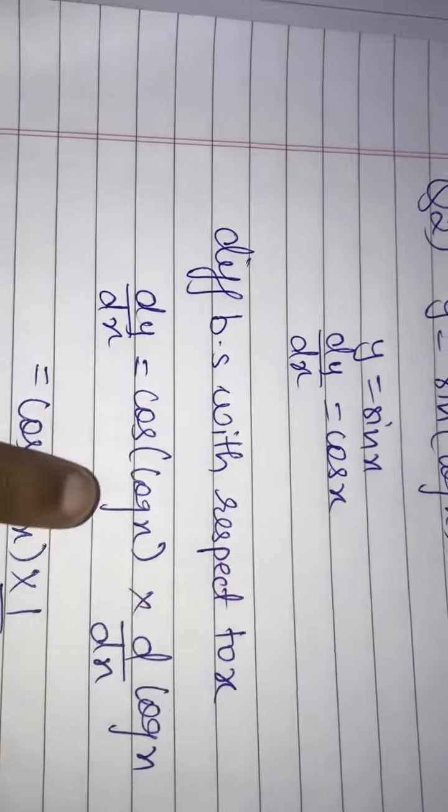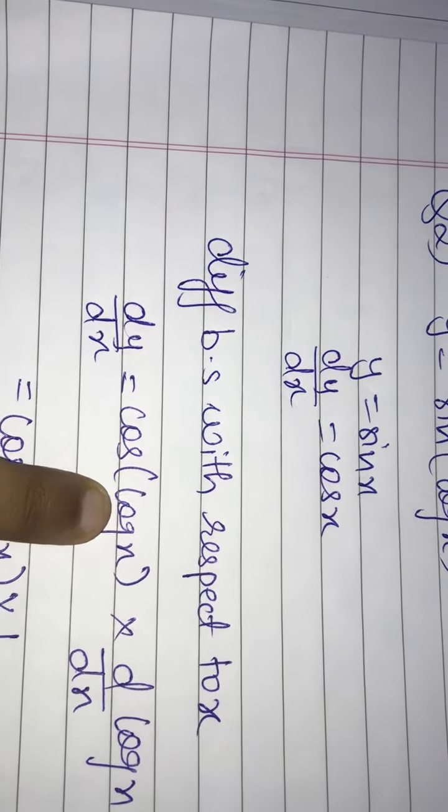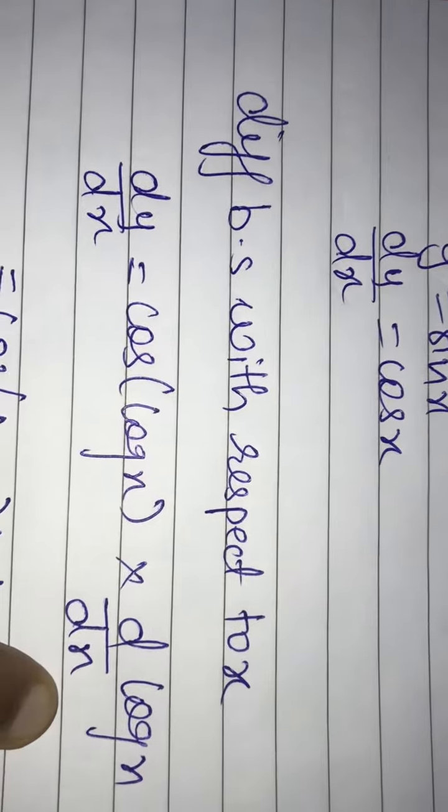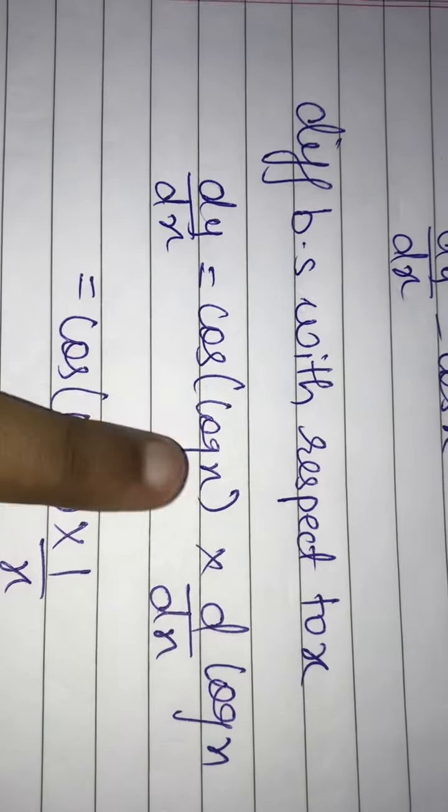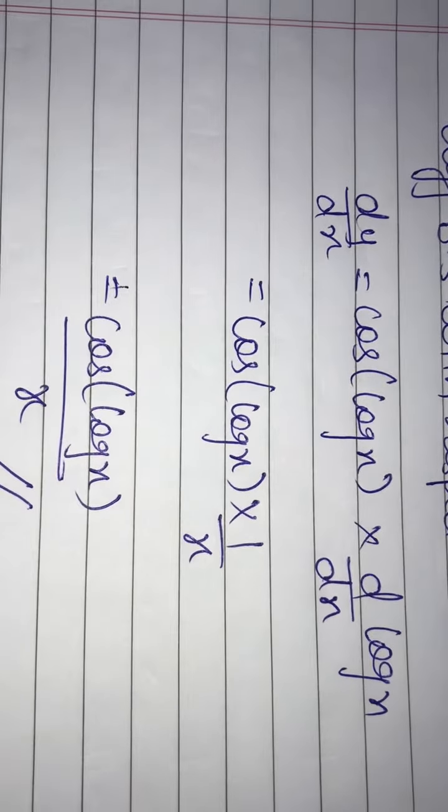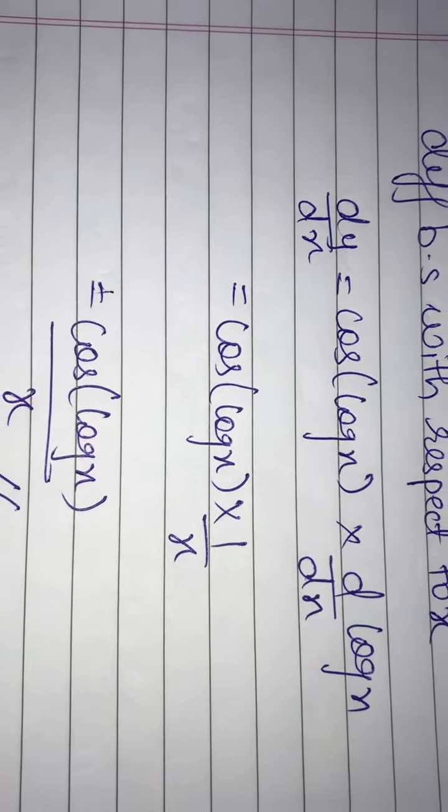The derivative of sin of log x is cos of log x into again derivative of log x, that is by chain rule. So you will get cos log x into derivative of log x is 1 upon x. So the final answer is cos of log x upon x.